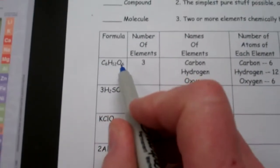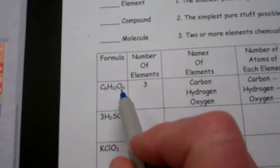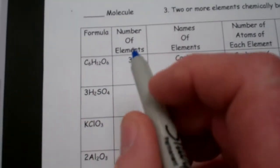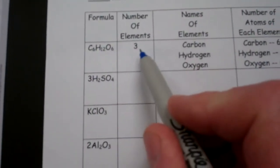Now, the next thing we do is we just look at a chemical formula. Here's a chemical formula for the molecule C6H12O6. This is sugar. Now, the first thing we want to make sure we understand is that in this formula, how many elements are there?